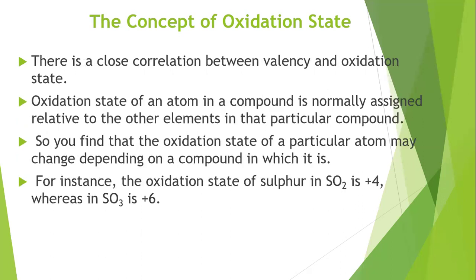There is a close correlation between the valence and the oxidation state — we talked about valence in our previous videos. The oxidation state of an atom in a compound is normally assigned relative to the other elements in that compound. For instance, the oxidation state of sulfur in SO2 is plus four, whereas in SO3 it is plus six.